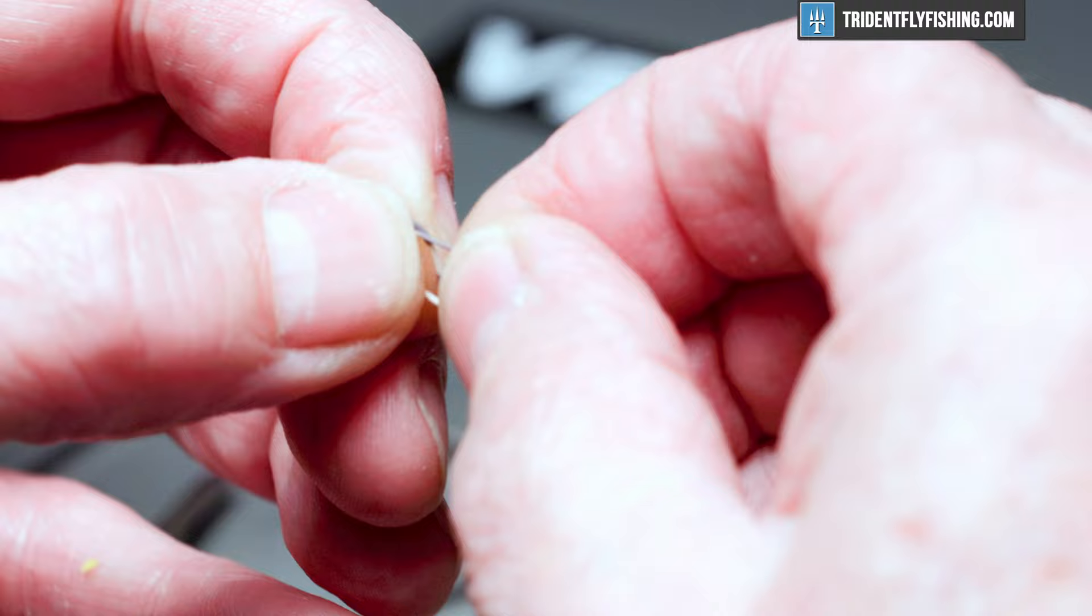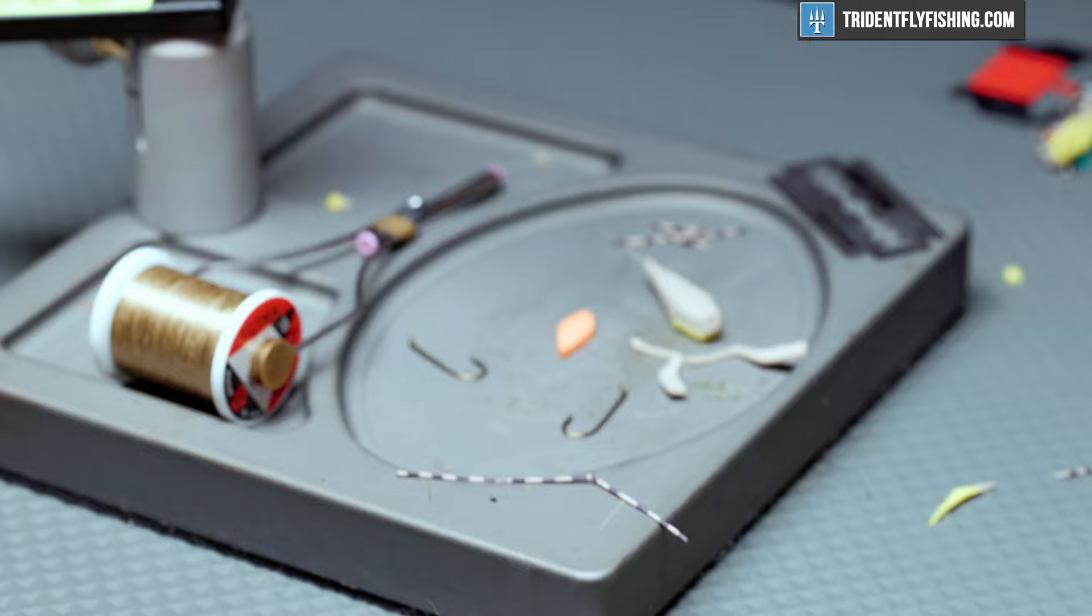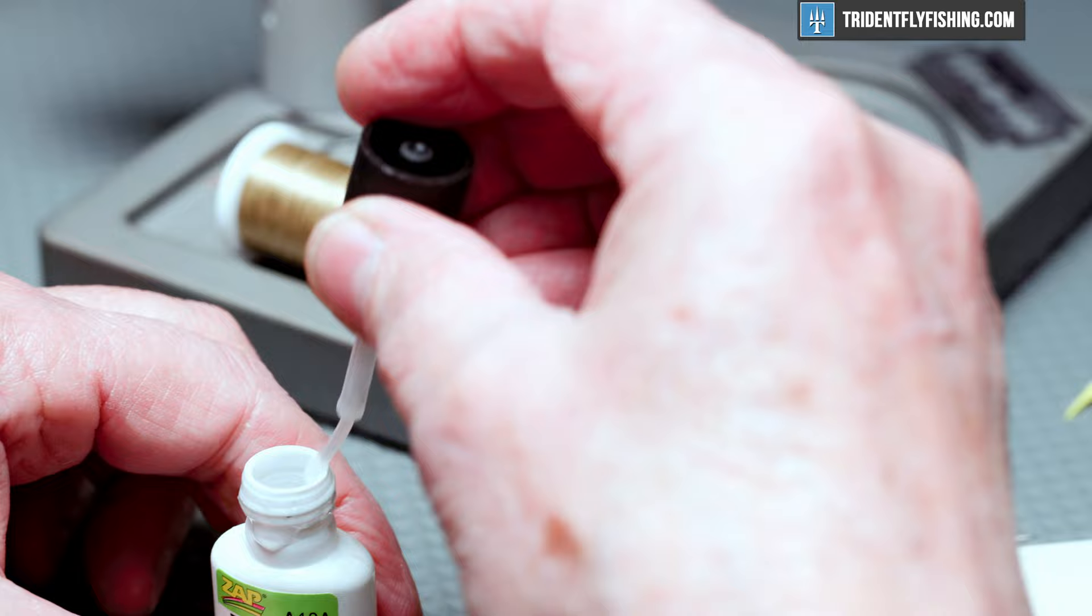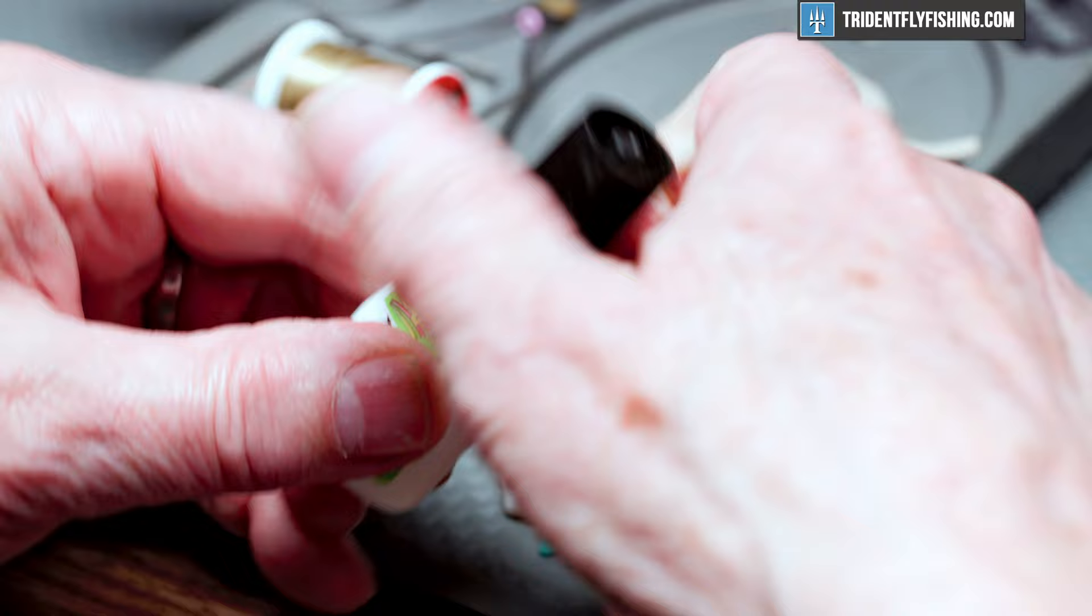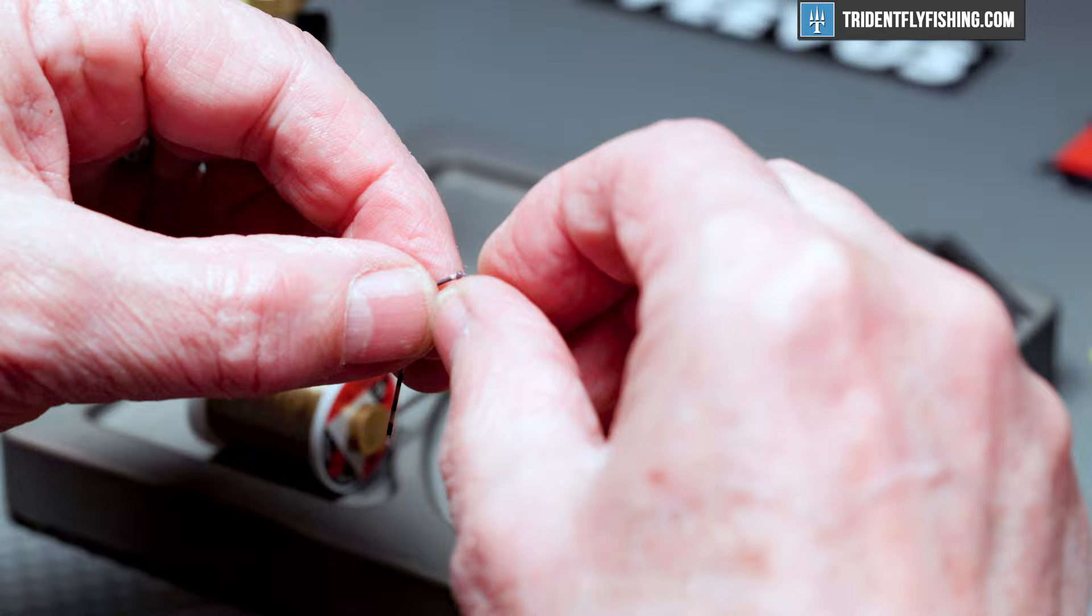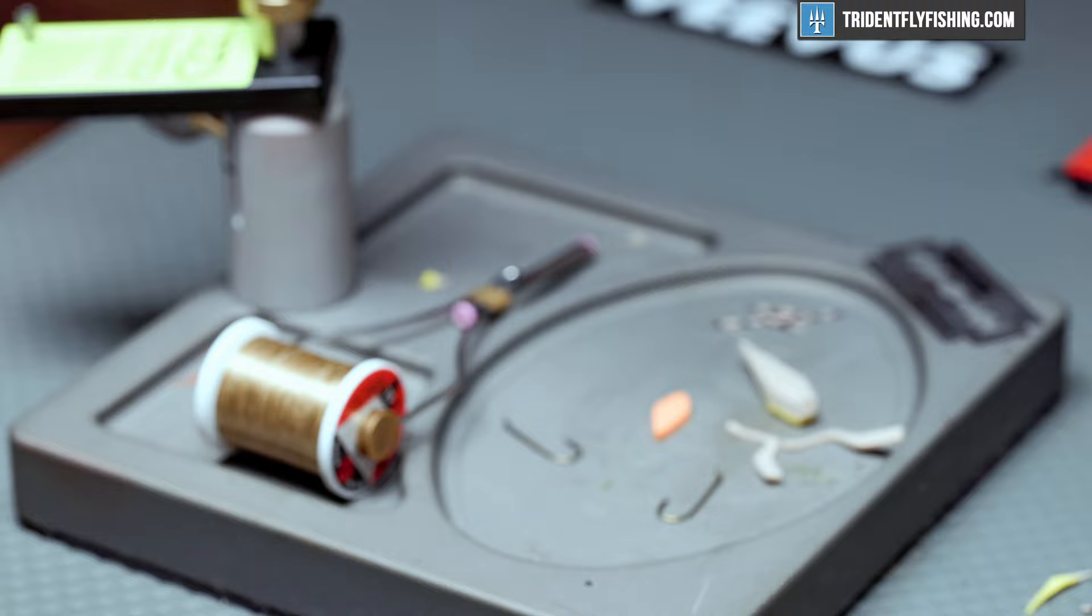Just a quick overhand knot and a little bit of zap-a-gap. Give that knot a stretch to set it. There we go. Alright, now we've got all the components ready to go we can tie the fly.